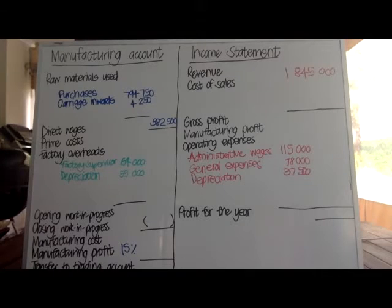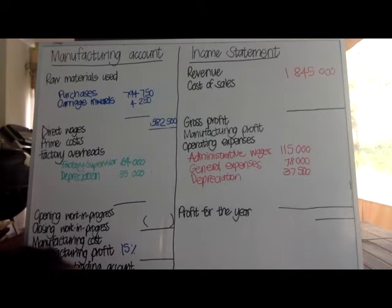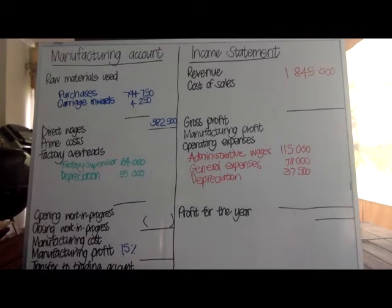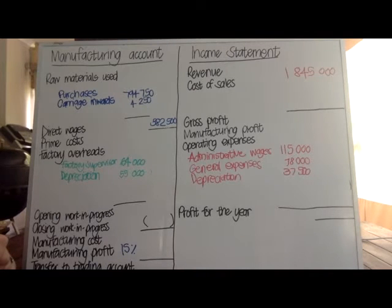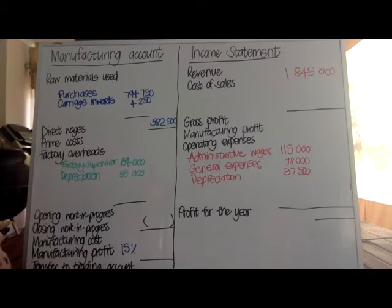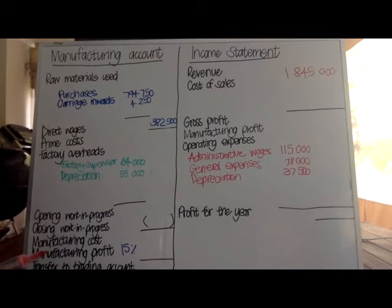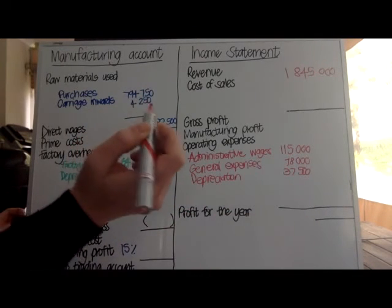We've now used all the basic trial balance figures — that's not so hard. Having done that, we're ready to look at the additional information, and just by doing that you will already have earned quite a lot of marks. At the 30th of September, there were accrued general expenses of 5,000 and prepaid general expenses of 3,000. You need to take both of these into account and adjust your general expenses figure accordingly.